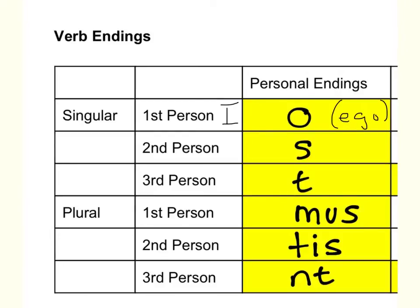S is second person, meaning the subject is understood to be you. In Latin, the word for one you is tu. T is third person — that's what we use for he, she, or it.